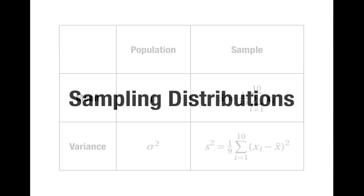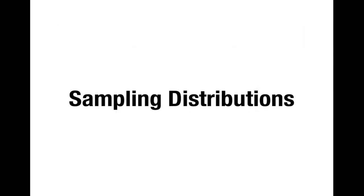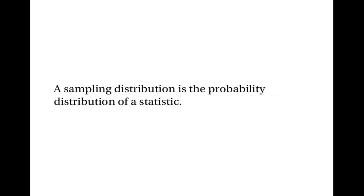The population mean and variance are facts, and the sample mean and sample variance are random variables which can be used to approximate them. Now the main point of this video is to work out some sampling distributions. A sampling distribution is simply the probability distribution of a statistic. So let's move on and look at some examples.